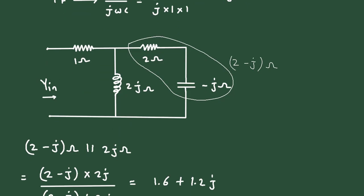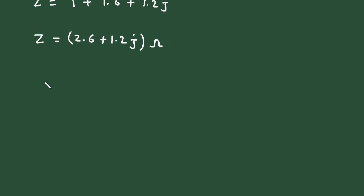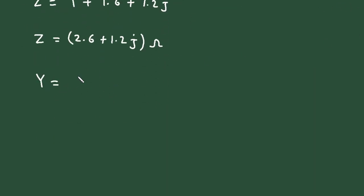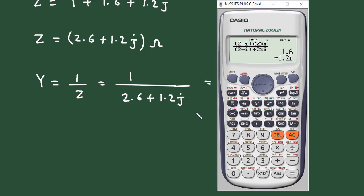But here we have to find its admittance. So admittance is Y equals 1 upon Z. So it will be 1 upon 2.6 plus 1.2j. If we solve this in calculator, it will be 1 upon 2.6 plus 1.2 into j.